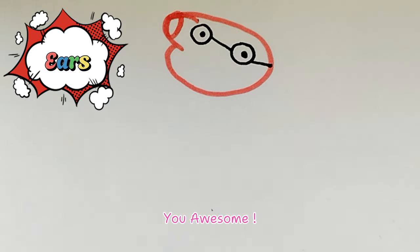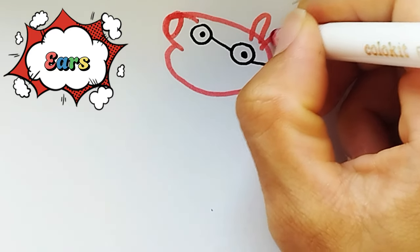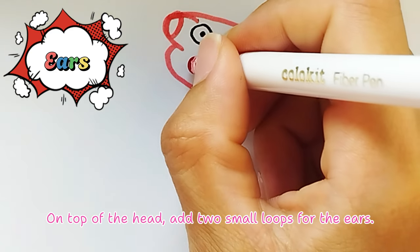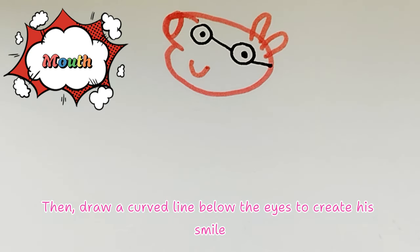You're awesome! Draw the ears and smile. On top of the head, add two small loops for the ears. Then, draw a curved line below the eyes to create his smile.